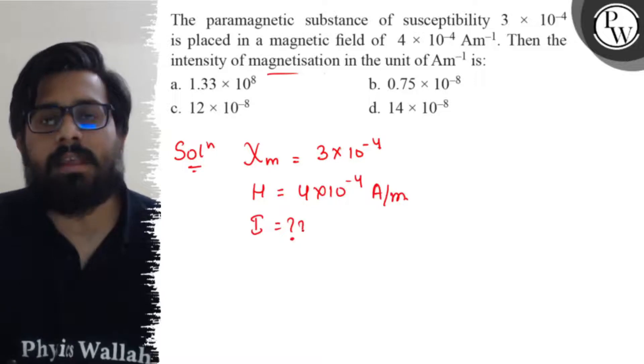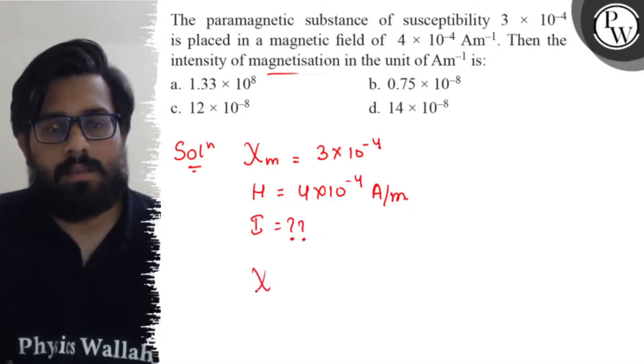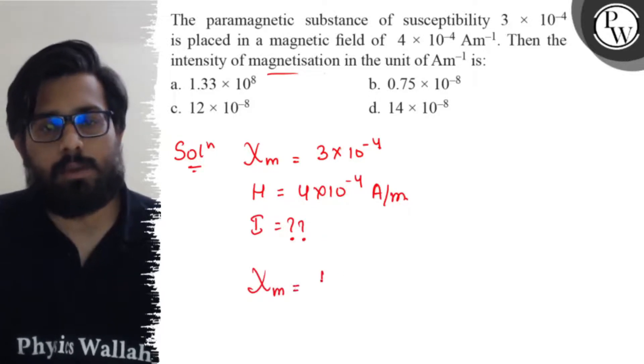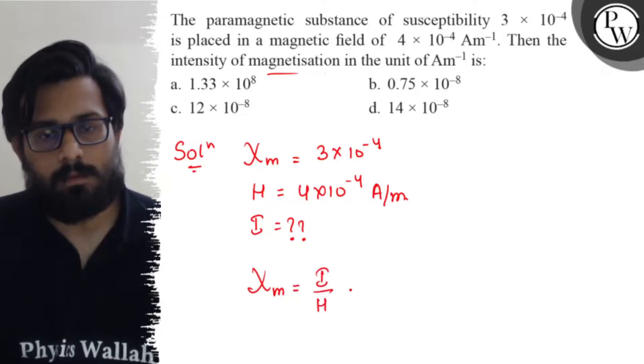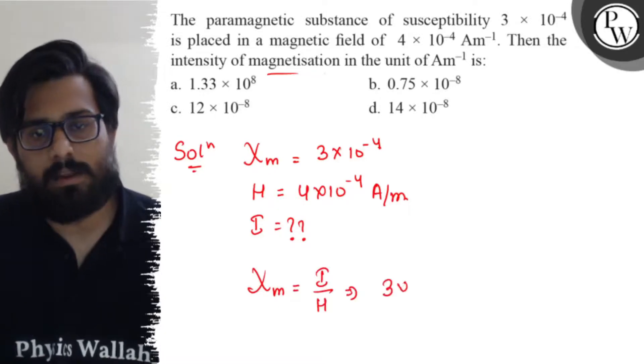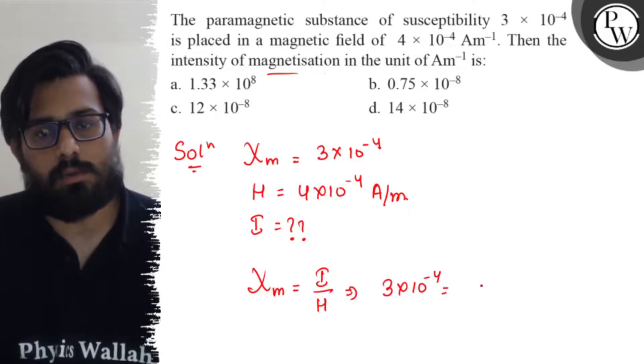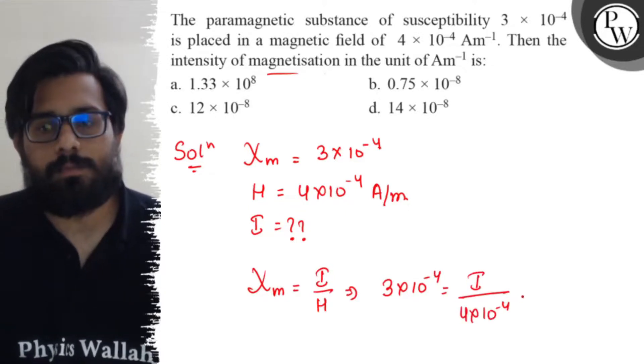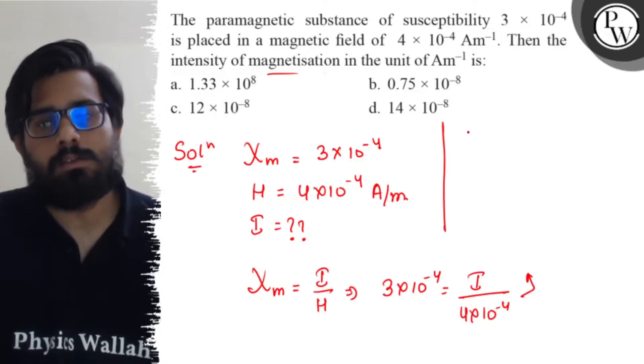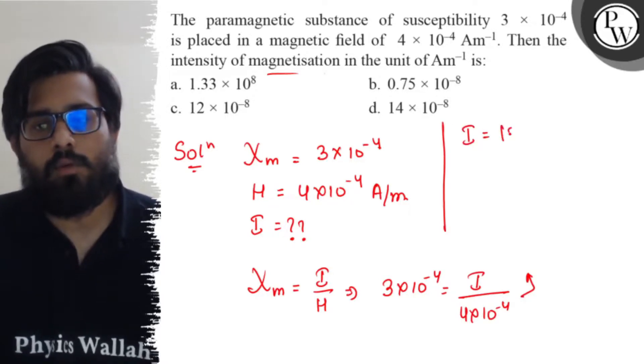We know the relation that susceptibility χ = I/H. So from here, χ = 3×10^-4 = I/(4×10^-4). Solving it further, I comes out to be 12×10^-8.